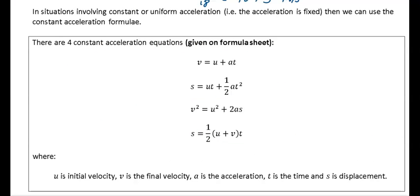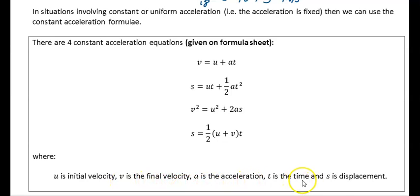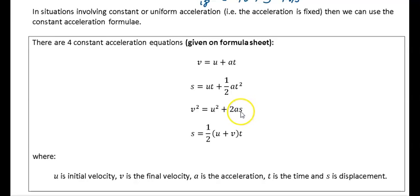Now we look at formulas for situations involving constant — or uniform — acceleration. These four are given in your formula booklet. The variables are: u = initial velocity, v = final velocity, a = constant acceleration, t = time taken, and s = displacement. You really need to learn these formulas plus one other very useful one.